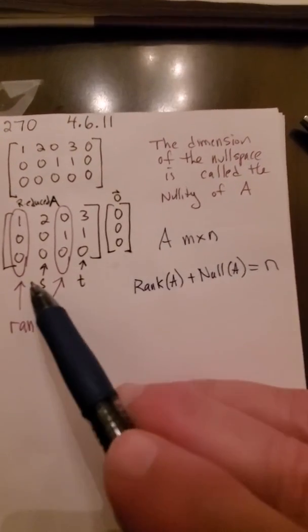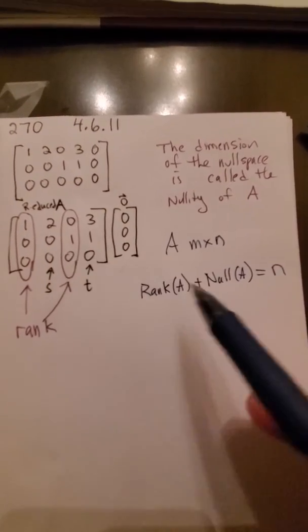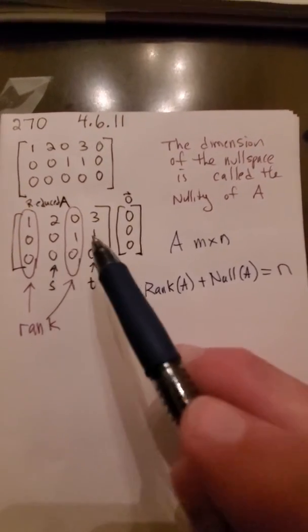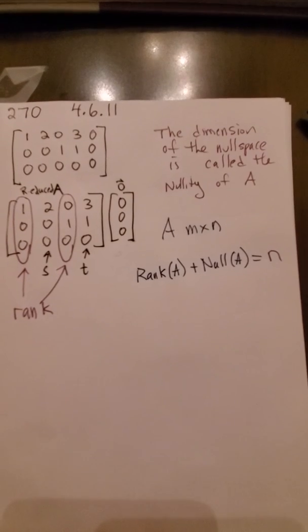Why? Because the rank comes from all the columns that have leading ones. The nullity comes from all the columns that don't have leading ones. Ta-da!